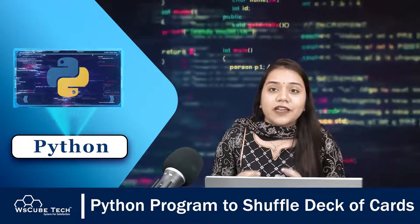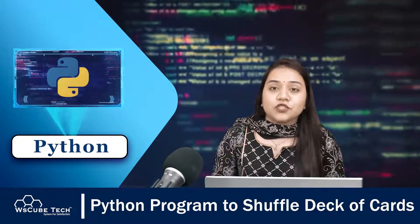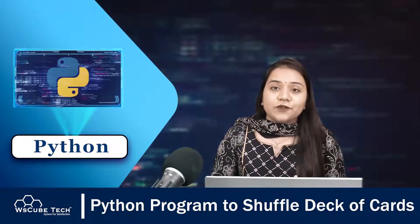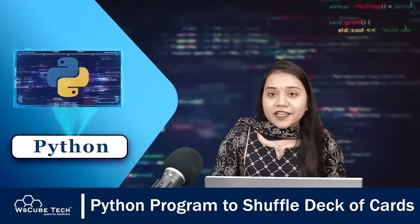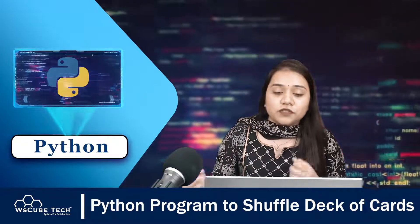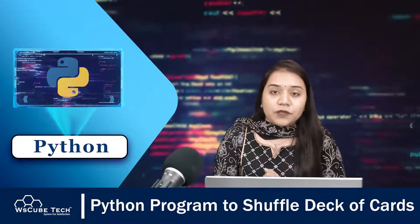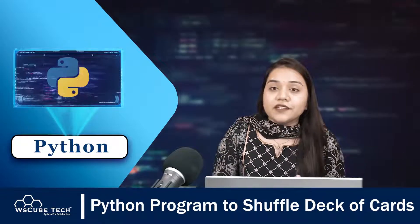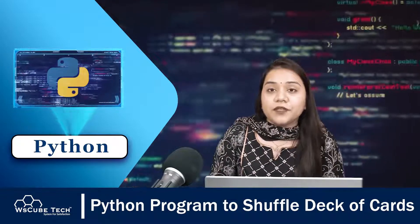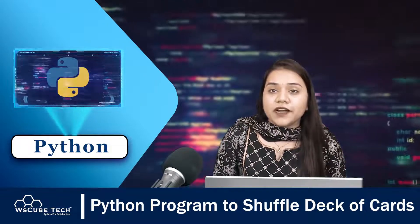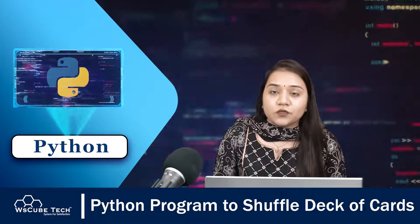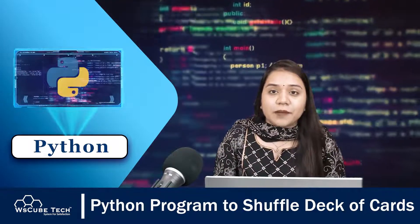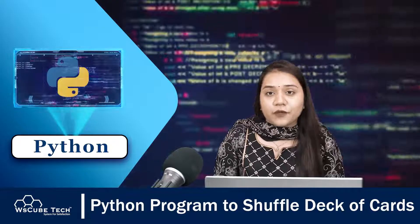Today what we need to do is write a program that will allow us to shuffle the cards. When we play cards we give five cards to the next person, so we'll be creating a range of five cards from the deck. To create this program we will be using two modules: the random module and the itertools module. With the help of these two modules we will be creating this program.